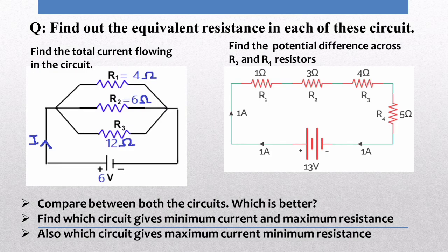Here is a homework exercise. Find the equivalent resistance in each of the given circuits, the total current flowing in the parallel connection, and the potential difference across R2 and R4 in the series connection. Compare both circuits: which gives minimum current and maximum resistance, and which gives maximum current and minimum resistance? The answers are in the description, but try working them out first before checking.